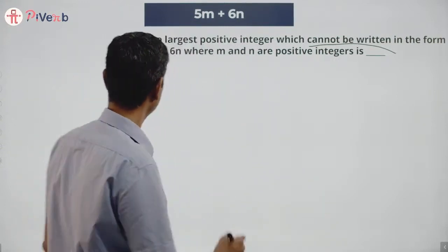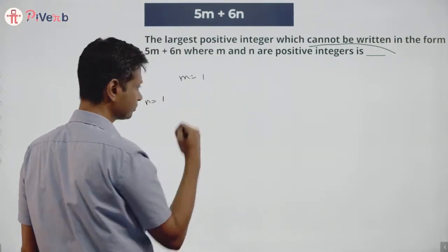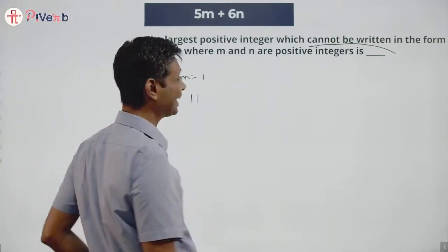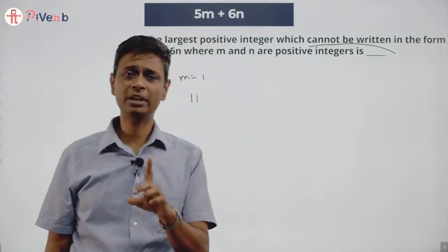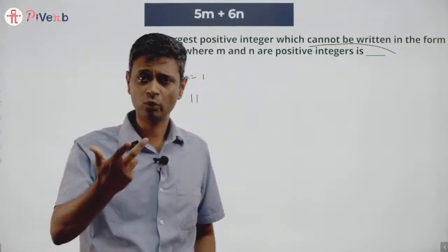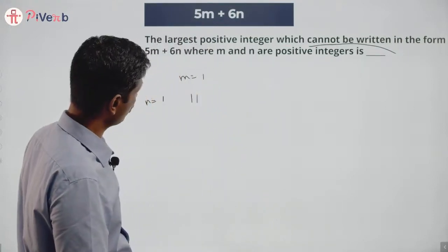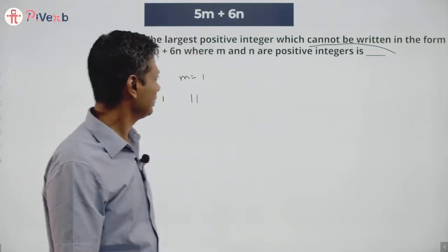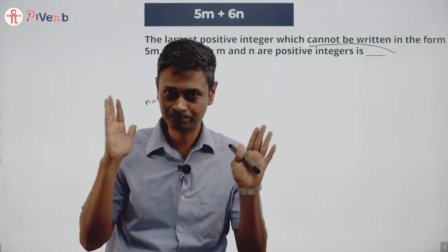m and n are positive integers, so the smallest value each can take is 1. Put m=1, n=1: 5×1 + 6×1 = 11. So I can write 11. The smallest achievable value is 11, meaning 1 through 10 cannot be written in this form.